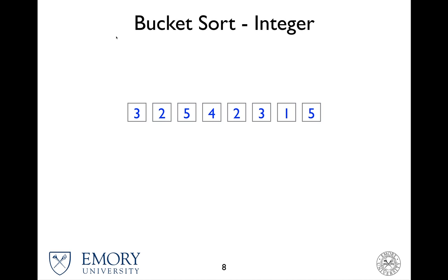The first thing that has to be done is to decide how many buckets we need. Let's see, we have only one to five integers, so we need at most five buckets to sort all these values.